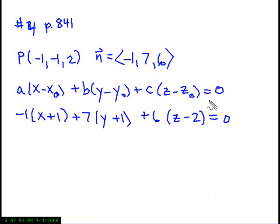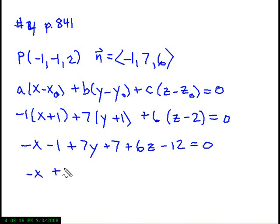It's just fine to leave the equation in this form, but let's just multiply it out just to see what this is going to look like. We're going to have -x - 1 + 7y + 7, plus 6z - 12 equals zero. Combining like terms, we have -x + 7y + 6z, and 7 - 1 is 6, minus 12 is -6 equals zero.